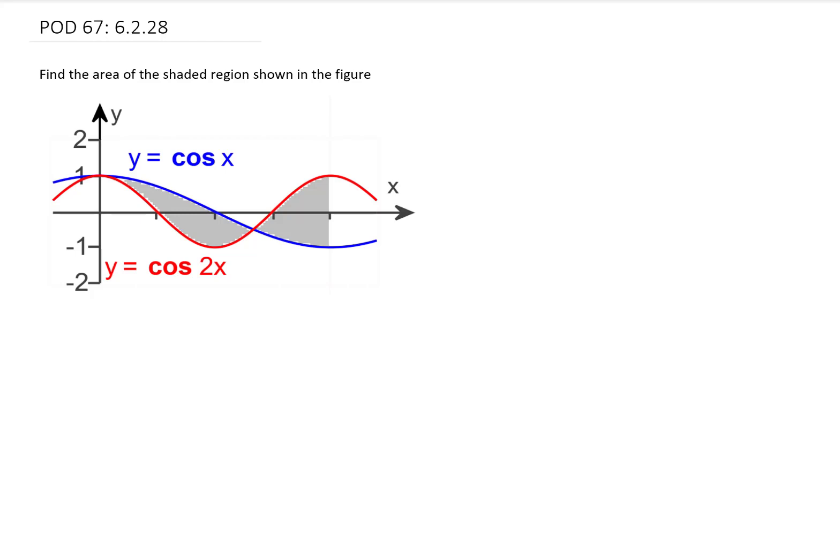We're going to find the area of this shaded region, and you'll notice that you're not given ticks on the horizontal axis in this picture. So we have to recognize that this blue function, this cosine graph, has gone through half of its cycle at this x value right here. So this x value here must be pi.